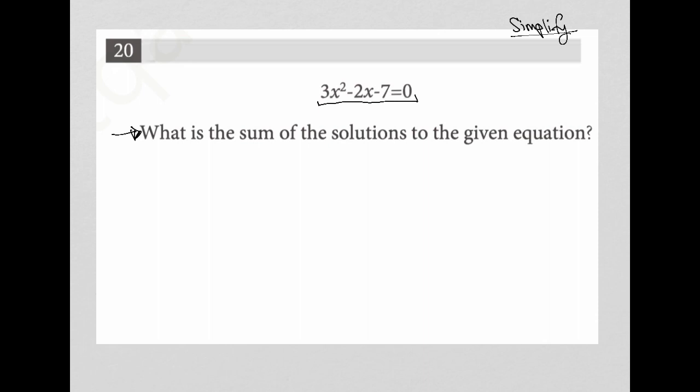So I'm going to rewrite this equation: 3x squared minus 2x minus 7 equals 0. I can see by looking at this, there's nothing I can actually simplify, but I can factor, and I would place factoring under the umbrella of simplification.